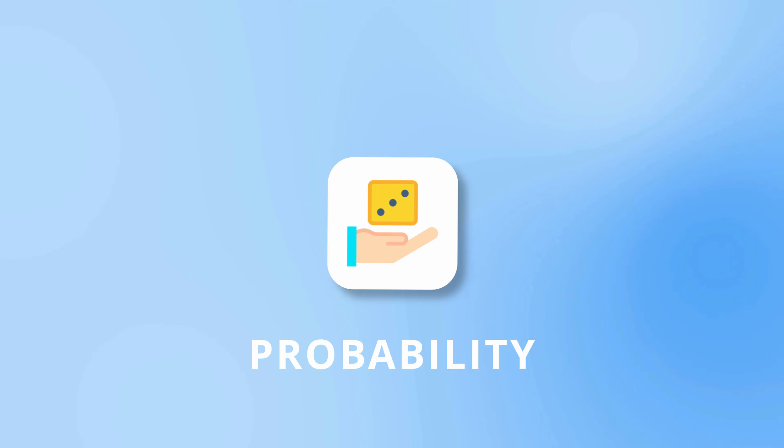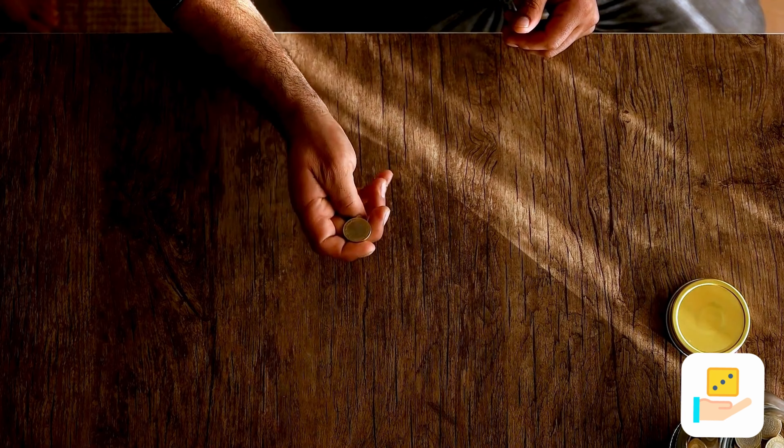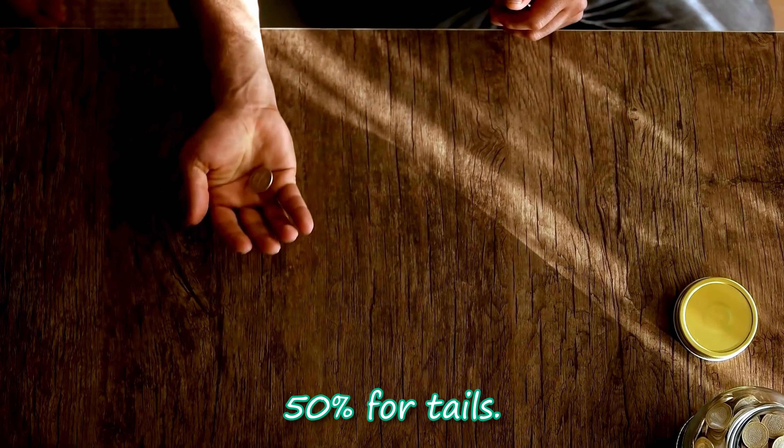In the first part of the series, we talked about probabilities. As a simple example, the probability of tossing a coin and having it land on heads or tails is 50% for heads and 50% for tails.